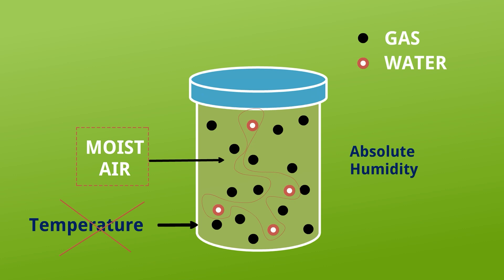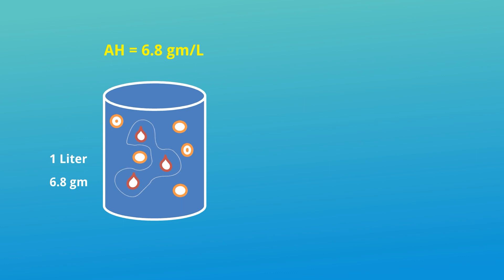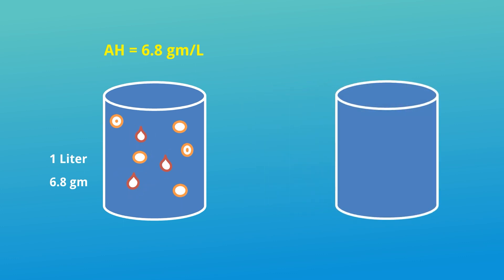Absolute humidity is irrespective of temperature, so we don't talk about temperature when defining it. Let's take a container of 1 liter volume — it has dry air and also has a moisture content of 6.8 grams. This means the container has 6.8 grams of water vapor in 1 liter of volume, so the absolute humidity is 6.8 grams per liter.